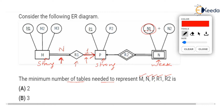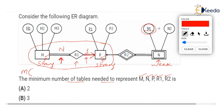How do you convert a many-to-one relation into tables? There will be two tables created — one for M and one for P. The rule is that the primary key of the one side (P) will be added as a foreign key on the many side. So P1, which is underlined as the primary key of P, will become a foreign key in table M.